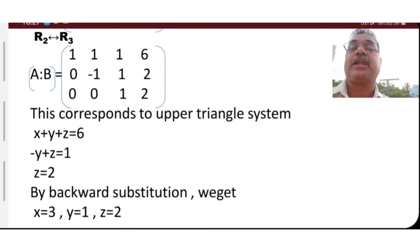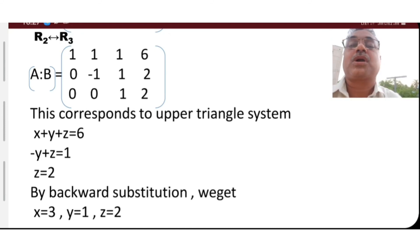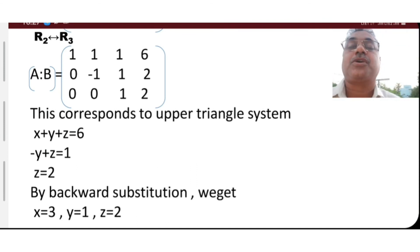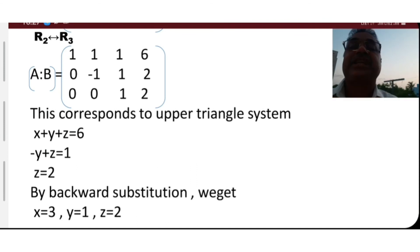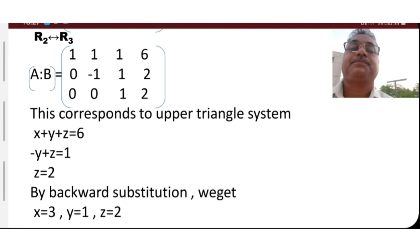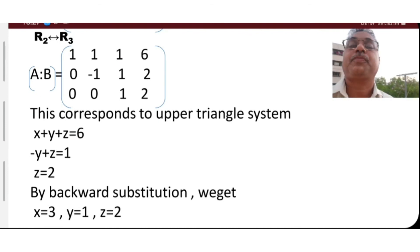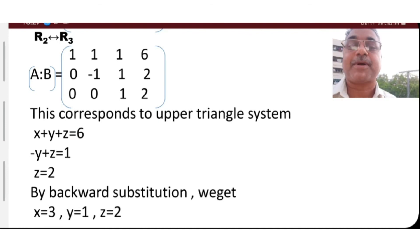So the final answer is x is equal to 3, y is equal to 1, z is equal to 2. In Gauss Elimination Method, we write the equations in the form Ax equal to b, form the augmented matrix, and reduce the principal diagonal elements to get the solution.